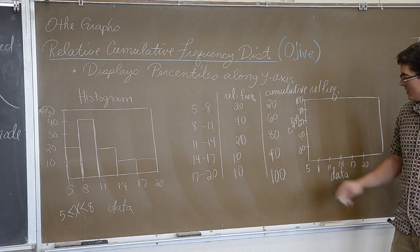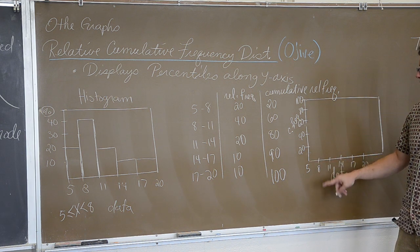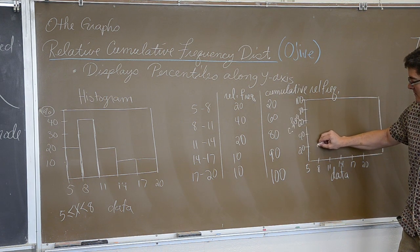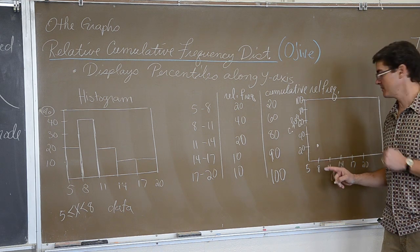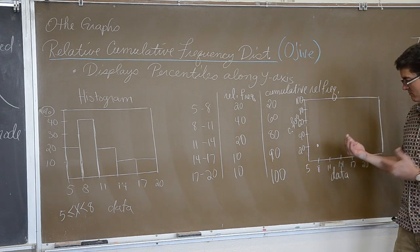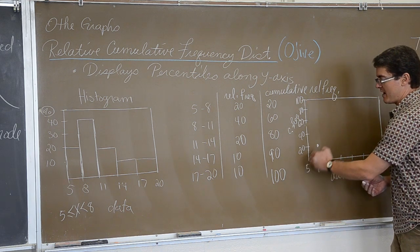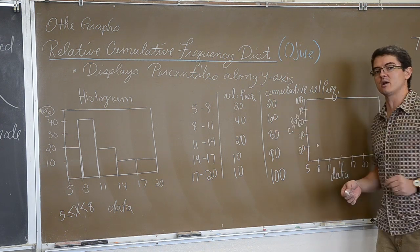So, between 5 and 8 we had 20% of the data. Now notice I put that dot at the right side of the interval.